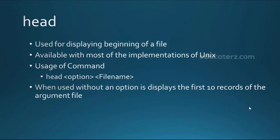The head command, as the name implies, displays the top of the file — it is used to display the beginning of a file. Head is available in most implementations of UNIX. By giving 'head' and a filename, you can fetch the first lines of the file. When you use the head command with no option, it returns the top 10 lines — that is, the first 10 lines of the file.